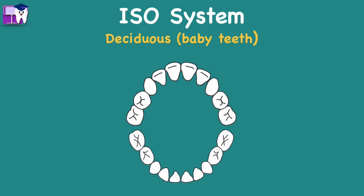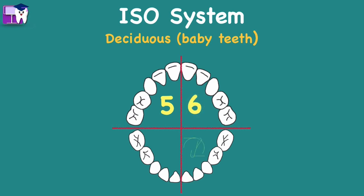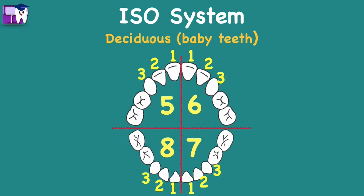Let us now apply the ISO system on the deciduous or baby teeth. To make quadrants, draw a line separating the upper and lower arch, then draw a line between the upper central incisors down to the lower central incisors. The number sequence is: upper right section is number 5, upper left is number 6, lower left is number 7, and lower right is number 8. Each primary tooth represents a number, counting from the central incisor to the second primary molar: central incisor is 1, lateral incisor is 2, canine is 3, first molar is 4, and second molar is 5.